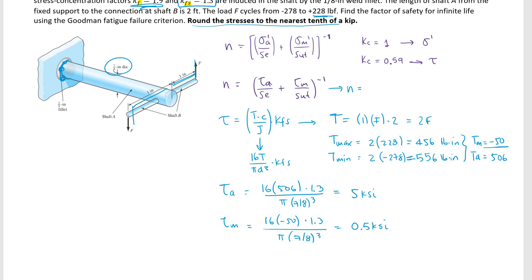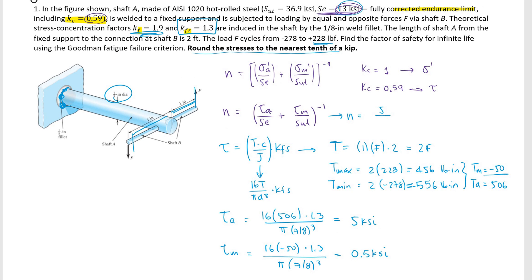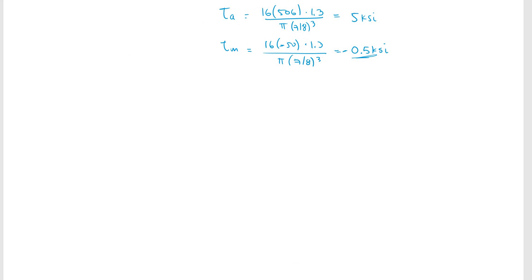Going back to the Goodman equation, N equals 1 divided by (tau_A over SE plus tau_M over S_ut). I don't need to change the SE because it already accounts for torsion — it's just 13. So N equals 1 divided by (5.0 over 13 plus minus 0.5 over 36.9), giving a factor of safety of approximately 2.7.